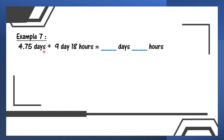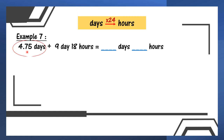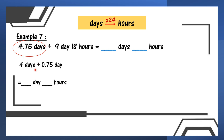Example 7: some days plus 9 days 18 hours, answer in days and hours. 9 days 18 hours we no need to change — tak payah convert yang ini. We need to convert 4.75 days — yang ini kita kena tukar. So we need to times 24 later. For 4.75, we separate it: whole number 4 days, and the decimal 0.75 days. We write down 4 days.